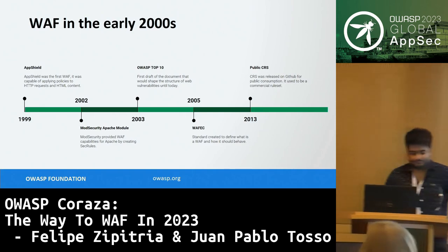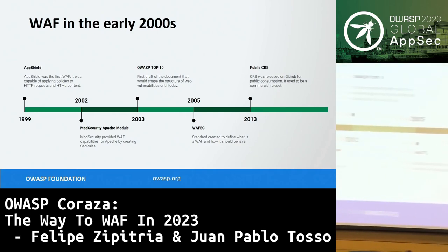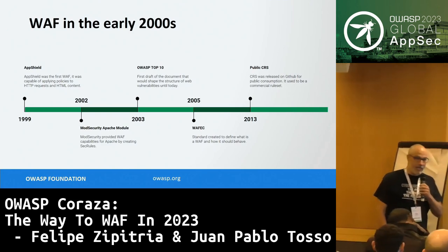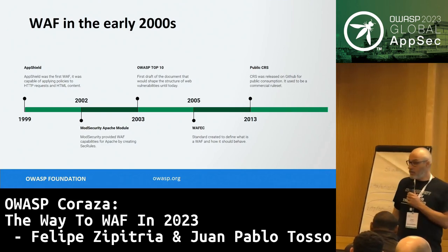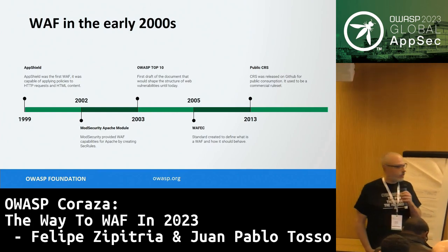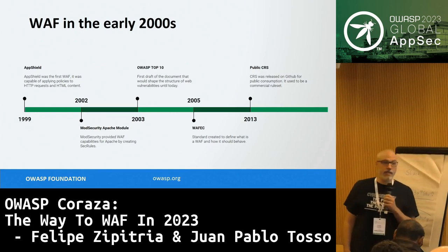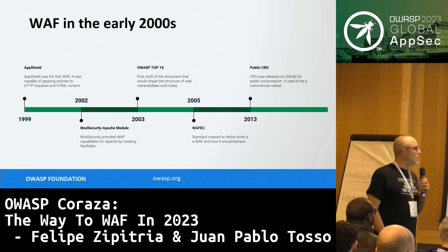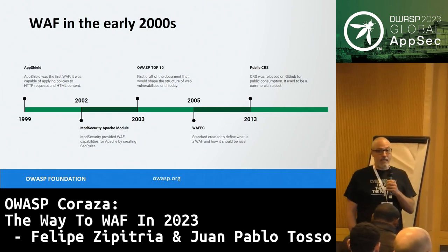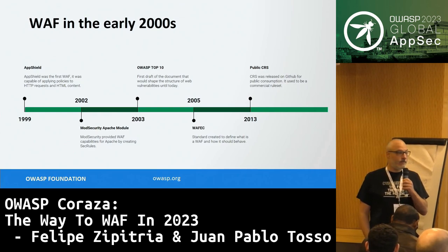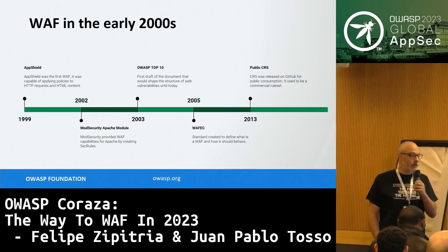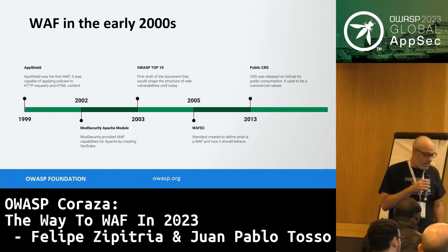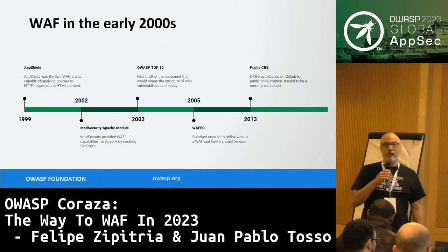In 2005 we got the WAF-EC — the Web Application Firewall Evaluation Criteria — a document created jointly by OWASP and the Web Application Security Consortium (WASC). It's a standard to define what a WAF should do, how we evaluate WAFs, what concerns we need to have about them, and how they are supposed to work.